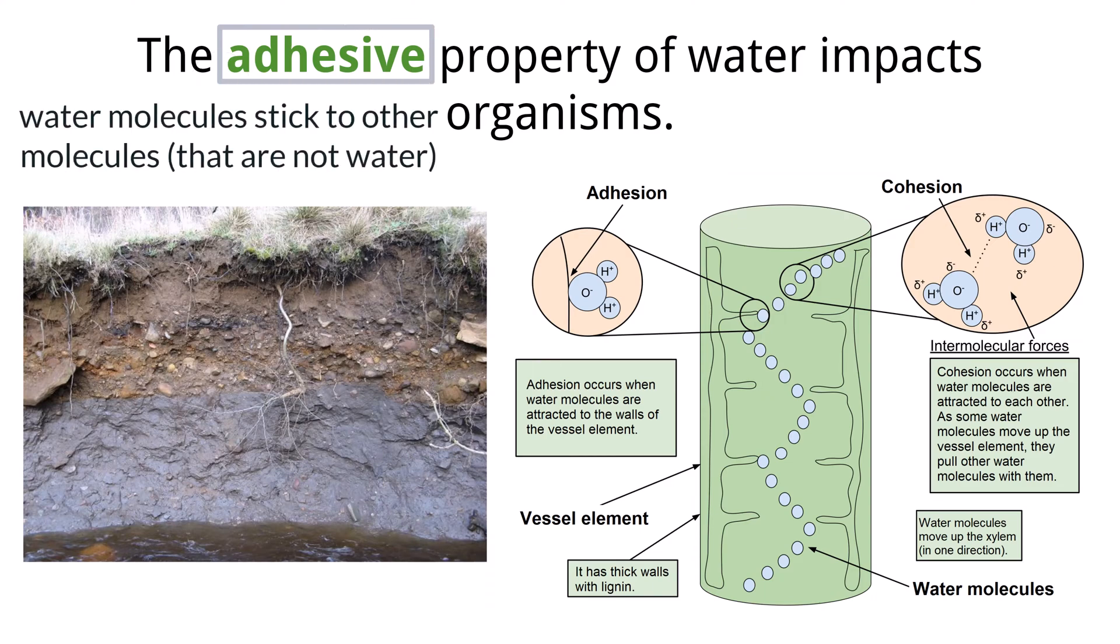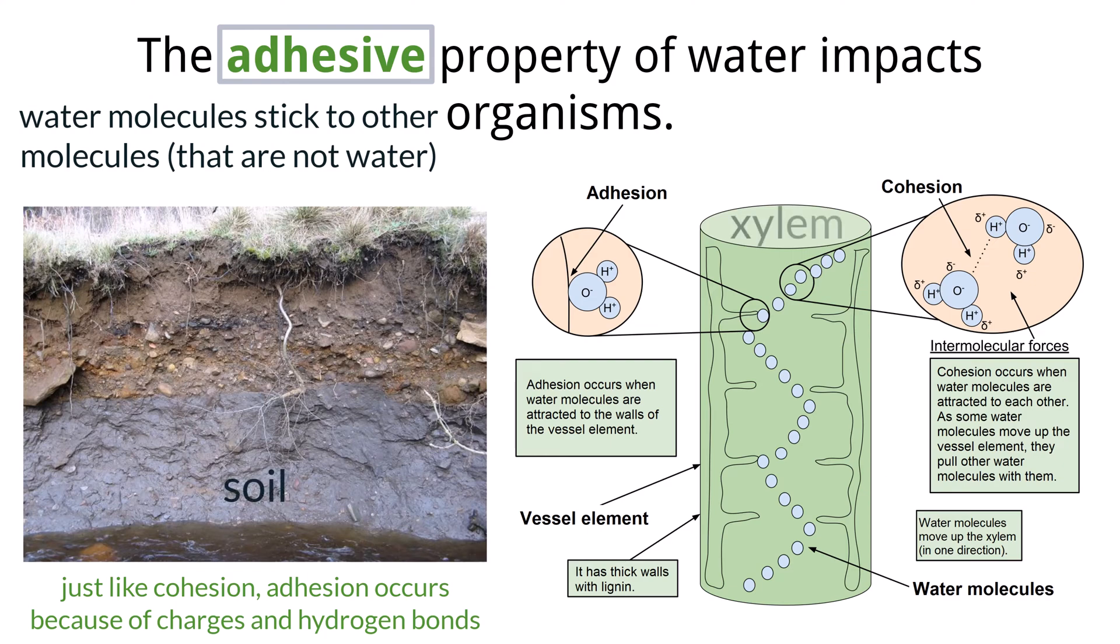Just like cohesion, adhesion can be explained by the structure of water molecules and their polarity and hydrogen bonds. Surfaces that are polar or possess charges that attract water molecules cause them to stick. To talk through a few examples, we can see this happening in soil and also in plant xylem. Let's start with soil.